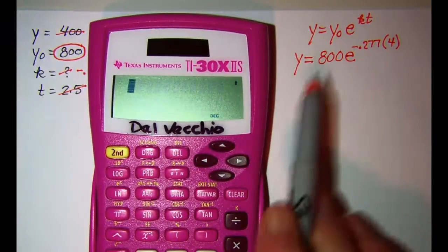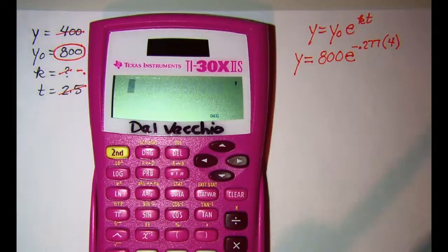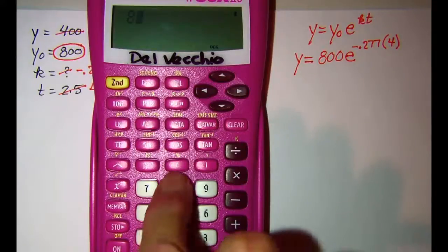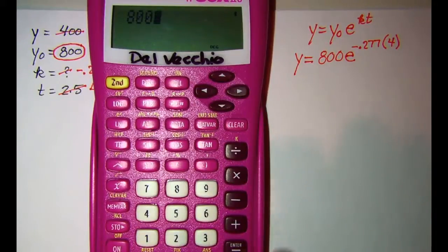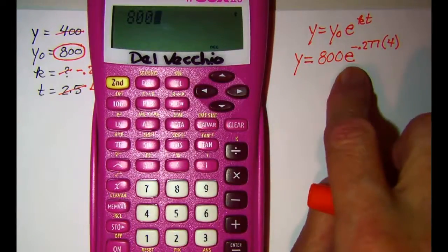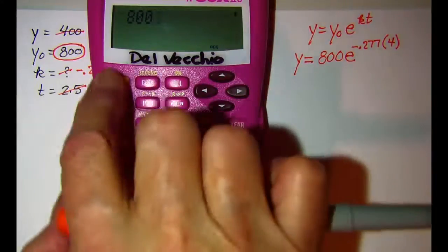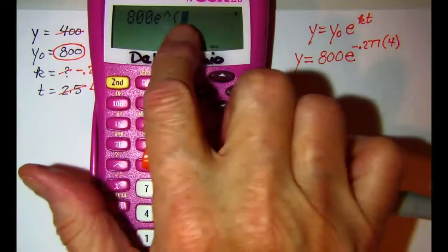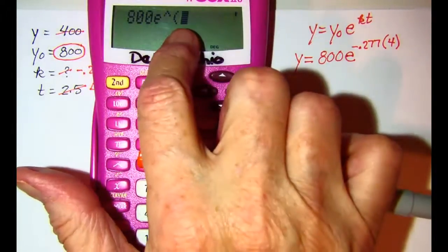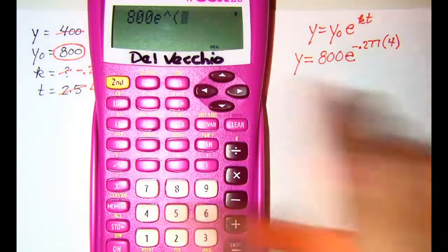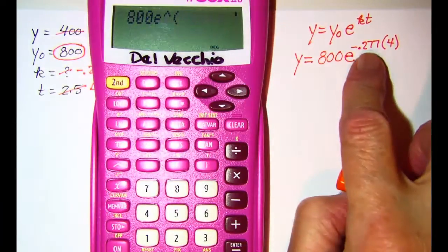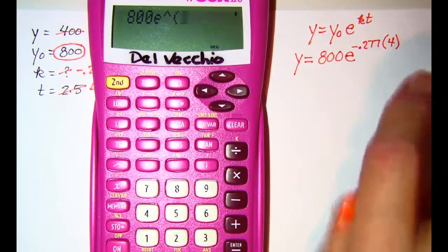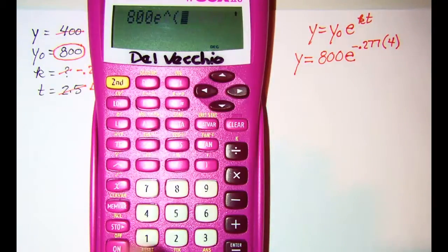So we can enter this on our calculator. We have 800 and then to get e we need to do second ln. And that automatically opens up the exponent with the parentheses. Instead of entering this number I'm going to recall the memory that I stored.